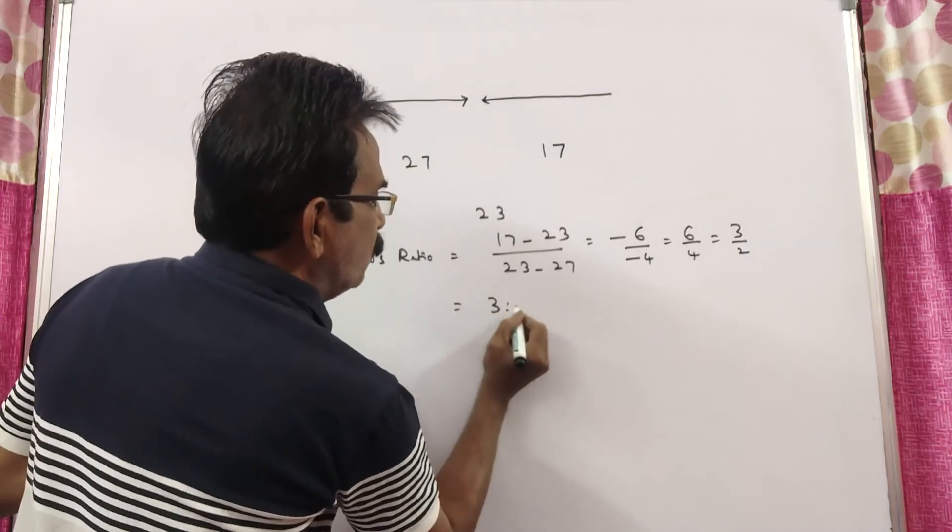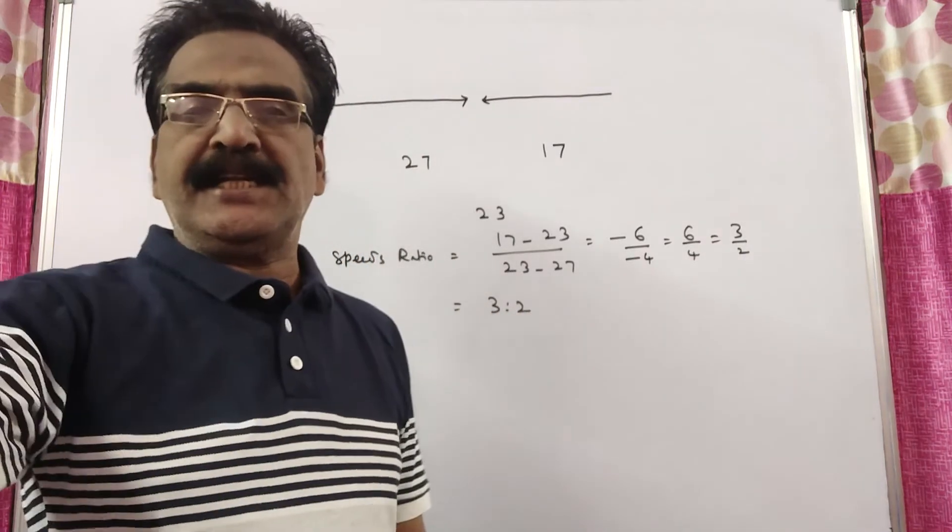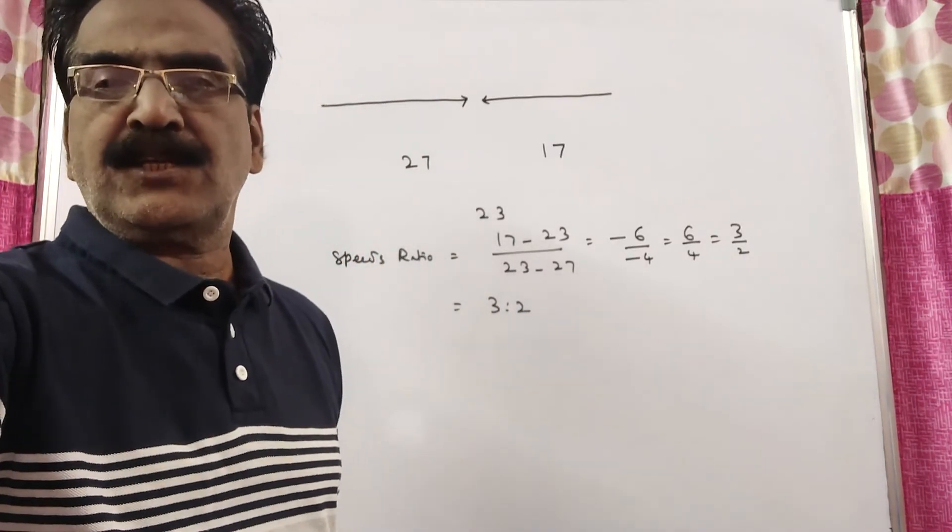So, 3 is to 2 is the ratio of their speeds, friends. Thank you, have a nice day.